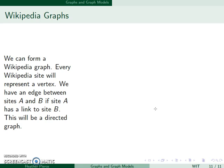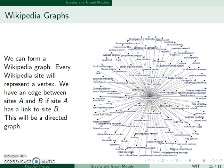We also have a Wikipedia graph. If we let every Wikipedia site represent a vertex, we'll have an edge between sites A and B if site A has a link to site B. This is going to be a directed graph. For example, this is a very small portion of the Wikipedia graph. This looks at the page of Network Theory.